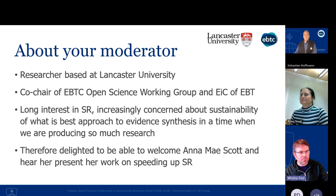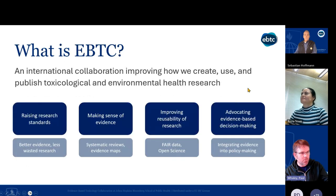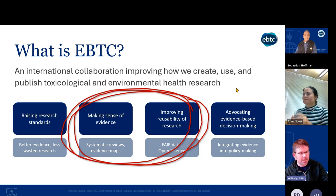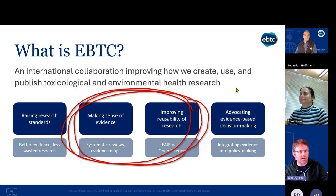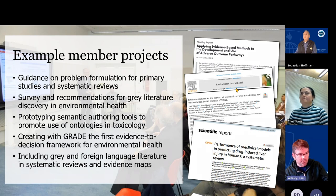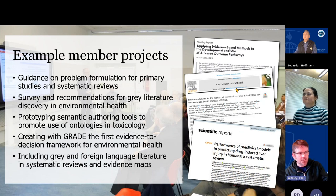If you're interested in working with EBTC or finding out more, we have four working groups. Today's talk cuts across two of them: our working group on evidence synthesis, about systematic review and evidence maps, and our open science and fair data working group, about improving the feasibility and speed of research. Projects include developing guidance on problem formulation, recommendations for grey literature discovery, prototyping semantic authoring tools for ontology in toxicology, and work with GRADE on an evidence decision framework for environmental health.